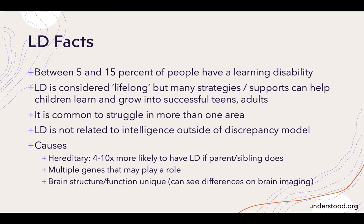For instance, a student with dyslexia would naturally struggle with math word problem units. They can also have a more organic difficulty with numbers. Learning disorders are not related to intelligence — a learning disorder is not an indication of any intelligence issues; it's its own thing. Learning disorders are hereditary: a student is 4 to 10 times more likely to have one if a parent or sibling does. There are genes that have been identified as playing a role, and brain structure and function is actually unique in children with learning disorders, which we can see on brain imaging.